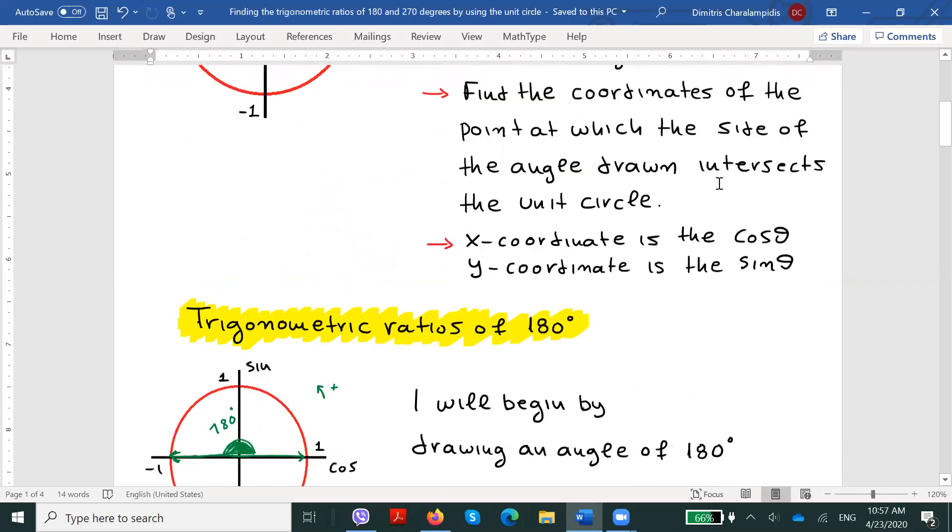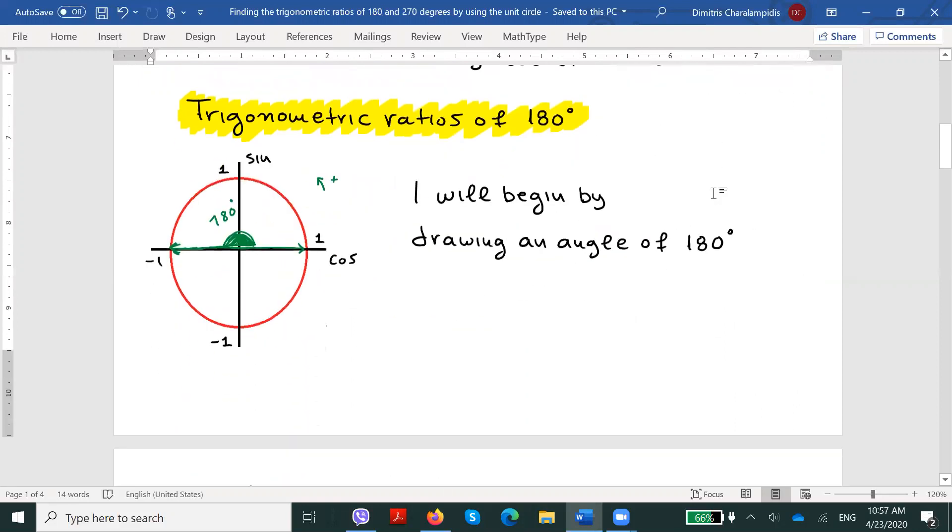Having that in mind, we are ready to start finding the trigonometric ratios of 180 degrees. As mentioned before, I will begin by drawing an angle that measures 180 degrees. Remember that an angle consists of a vertex, which in our case will be the origin, and two sides.